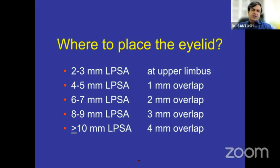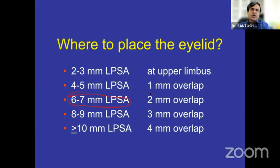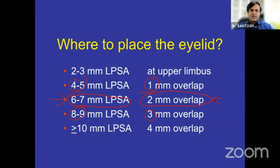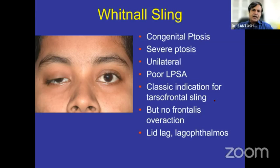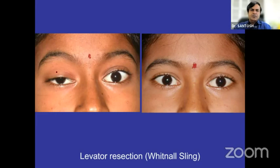Where to place the eyelid: for 6-7 mm levator action, place the lid exactly where you want it post-operatively. If levator action is poorer, overcorrect slightly; if better than 6-7 mm, undercorrect slightly — because poorer levator action predicts post-operative droop, and better levator action predicts post-operative lift. For very severe ptosis with poor levator action where the child is not using the brow due to severe amblyopia and has no stimulus, perform a Whitnall sling. Whitnall's ligament is attached to the tarsus internally through a skin approach and works beautifully.